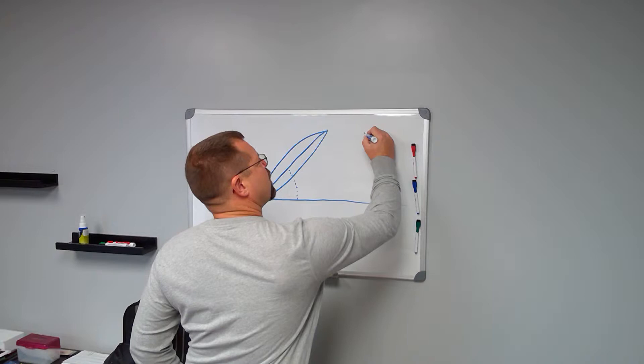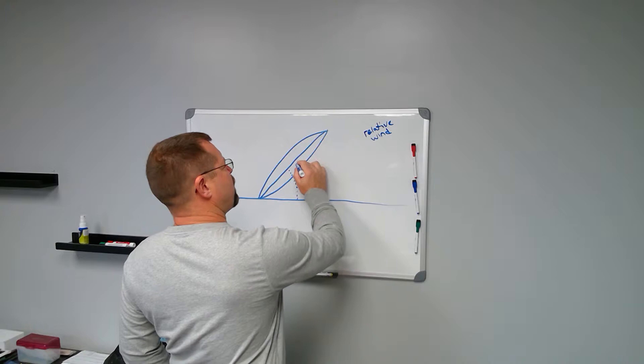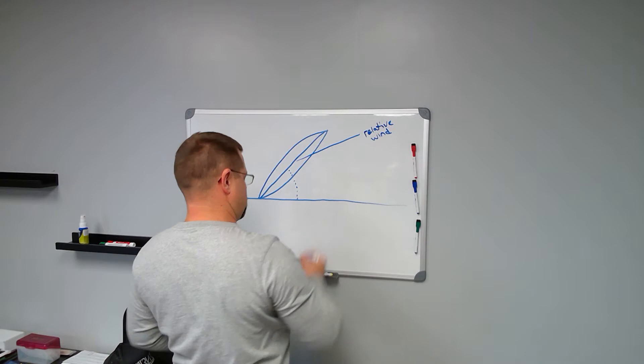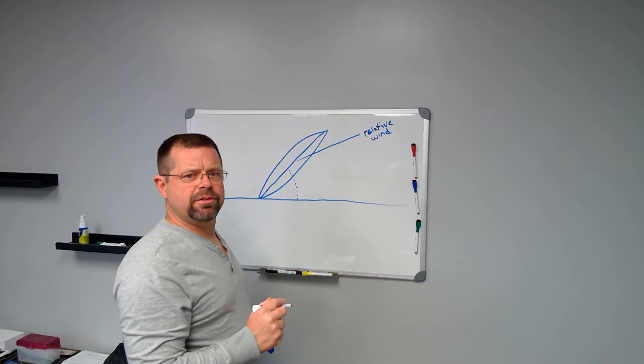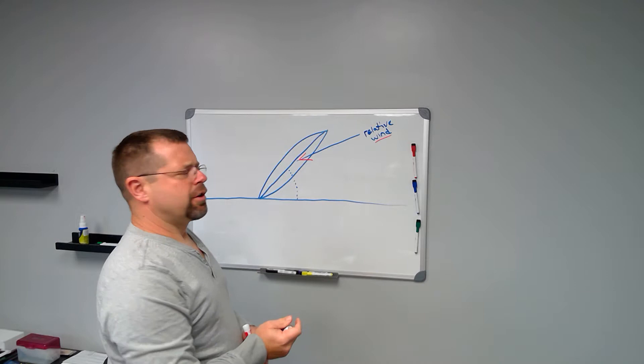So now we have to discuss relative wind. Let's say in a hover, relative wind is coming in at this angle right here. And again, I'm not an artist and this is an imaginary scenario to show you what happens. Relative wind is coming in at this angle.